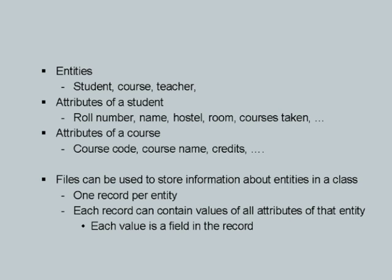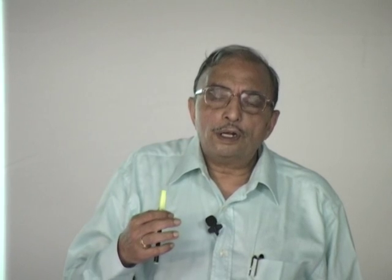First of all, entities: practically everything that you see is an entity. It could be an abstract entity or a physical entity. For example, a student is a physical entity, a course is an abstract entity, a teacher is another physical entity, and a hostel is a physical entity but could have abstract attributes. When we look at information related to entities, we find that is exactly what we wish to capture, what we wish to store, what we wish to process, and what we wish to produce as output results.